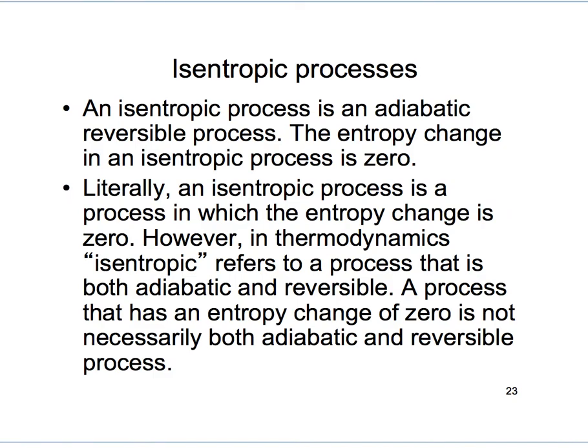In this lecture we are going to talk about isentropic processes. An isentropic process is a process that is both adiabatic and reversible. If we recall the relation between dS, entropy change, and q, heat added into the system, for a reversible process, we can immediately see that if a process is adiabatic and reversible, then that process must involve no entropy change, because dS equals delta q_in divided by T.